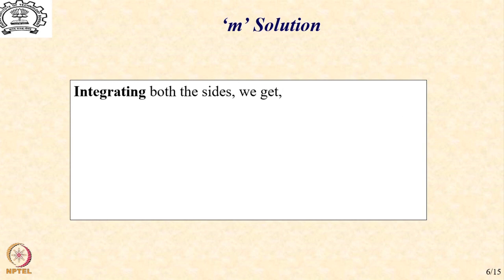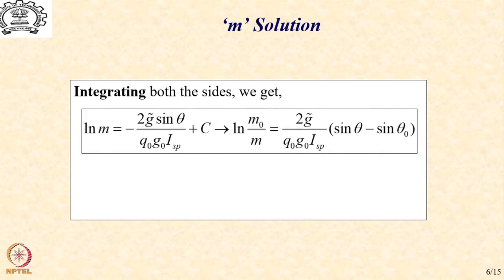Going through with the integration process, we find that this leads to the basic result: ln(m0/m) = (2g̃ / (q0 · g0 · Isp)) · (sin θ − sin θ₀). This is the solution for the mass fraction executed under a constant pitch rate maneuver.